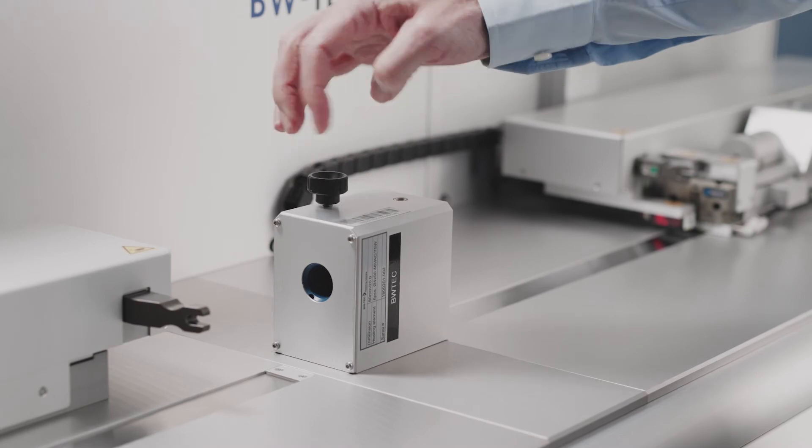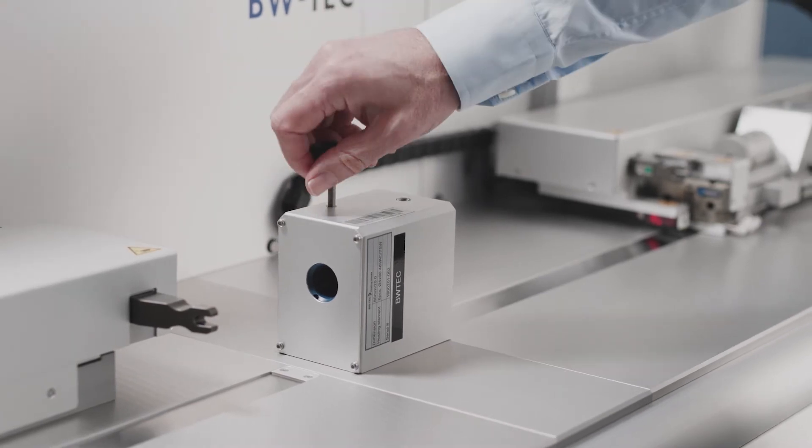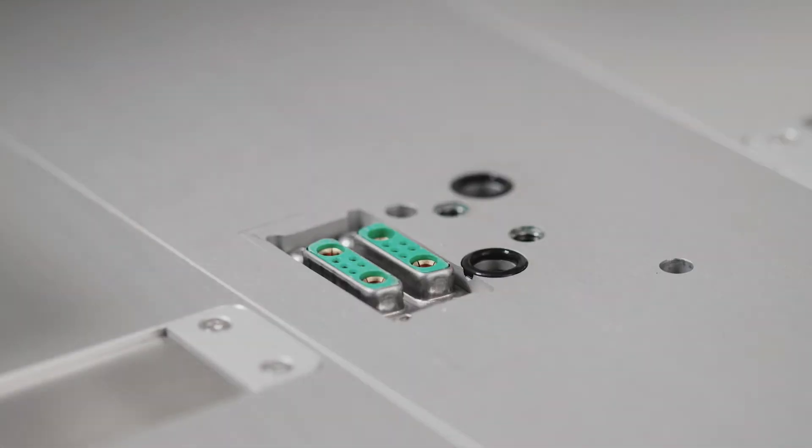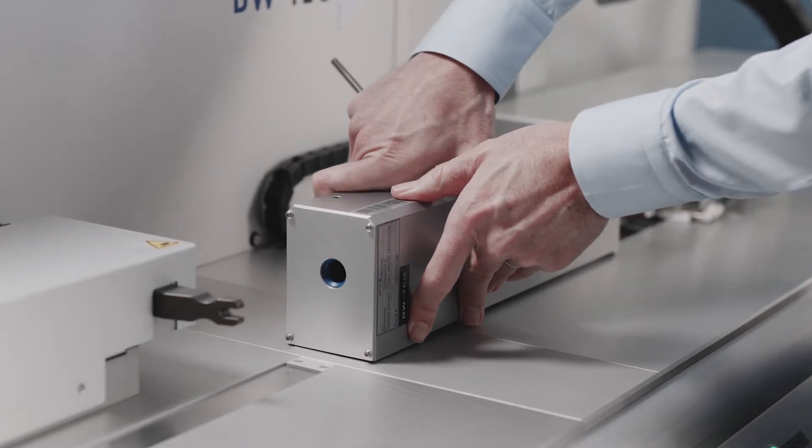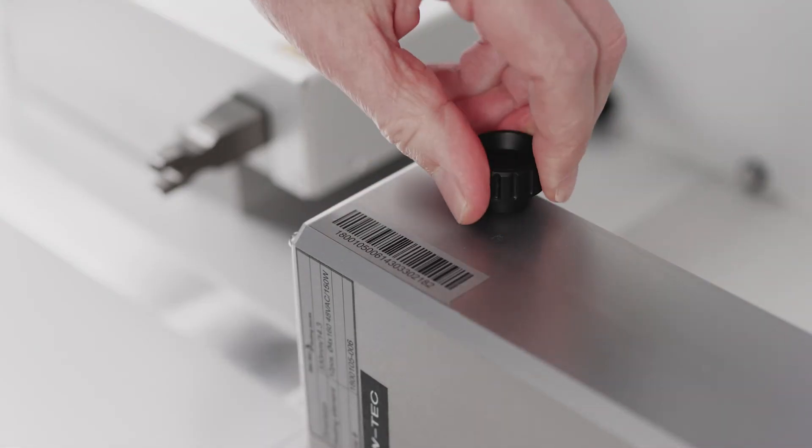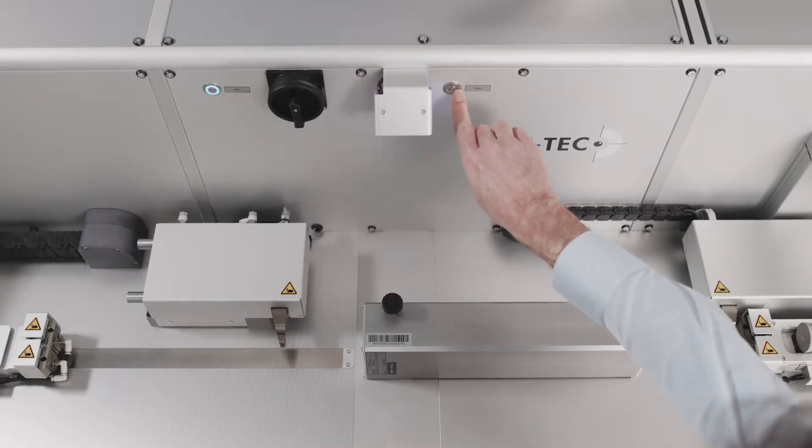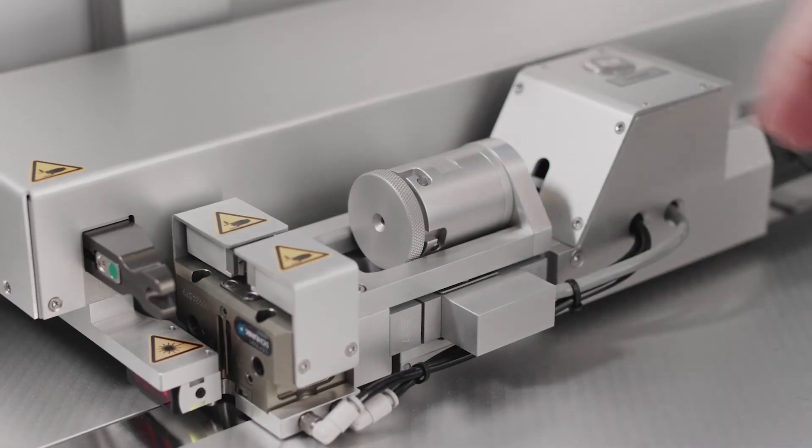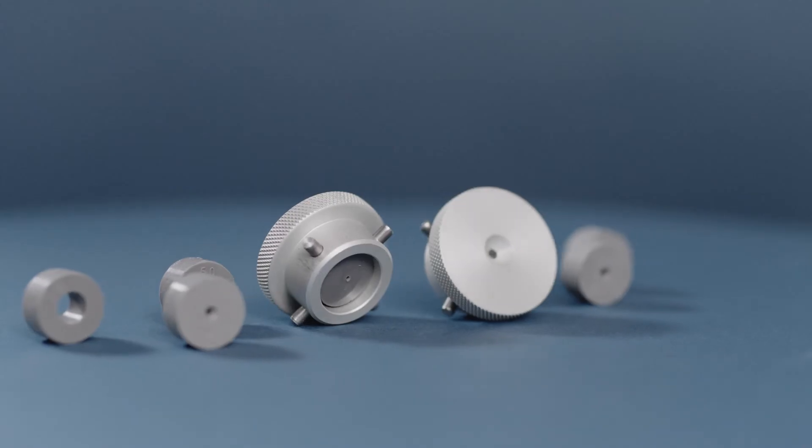There are easy changeable heating blocks with integrated water connections for different diameters and lengths. The barcode scanner compares the heating block with the recipe to prevent any mismatch. Furthermore, there is a high pressure connection with the BW tech quick release for fast exchange of the clamping ring sizes.